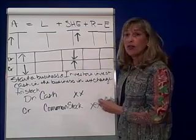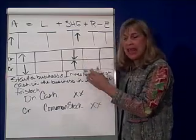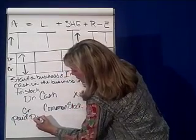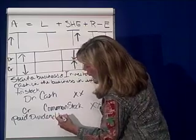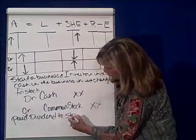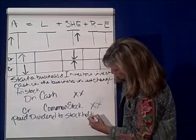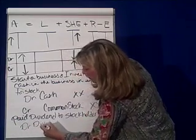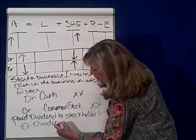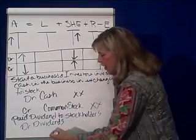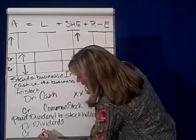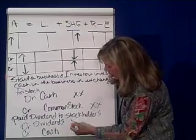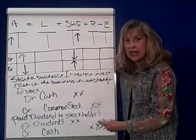The second one we did was we paid a dividend — paid a dividend to stockholders. To do that, we're going to debit dividends, an owner's equity account, which makes owner's equity go down. And we're going to credit cash. Notice again, debits are first, credits are second, and credits are indented.